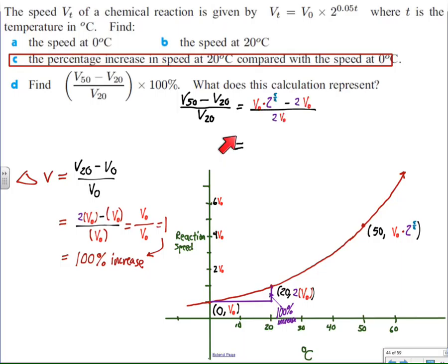Exact same calculations happen as before, except instead of 50s or 100s, I put V naughts in here. I factor out the V naughts. I still get the same 182.8% increase.